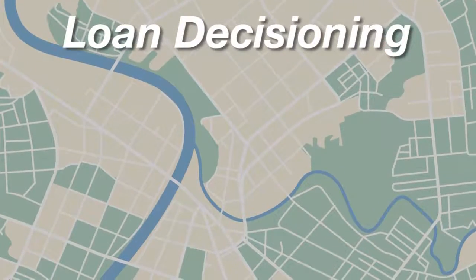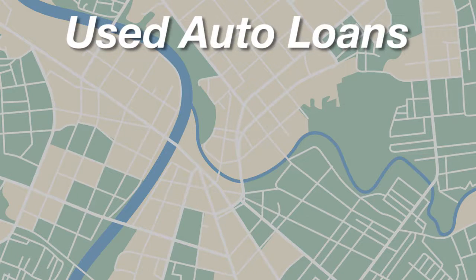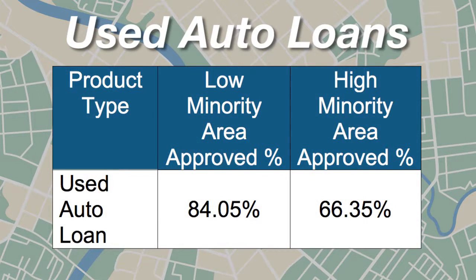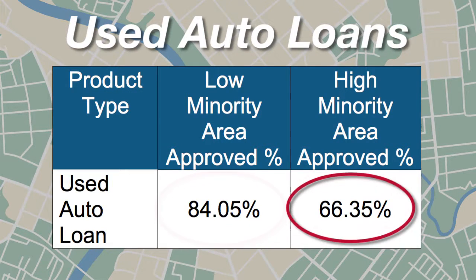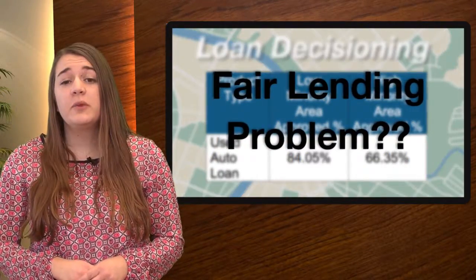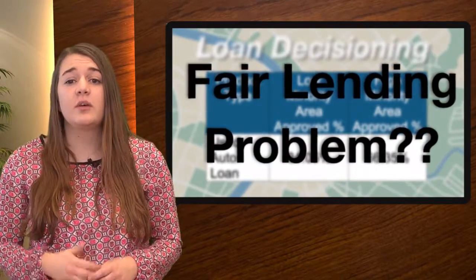For example, say you took a look at your loan decisioning data for a given product, such as used auto loans, in two areas of your community with differing minority concentrations. Here we see an 84% approval rate in a low minority area compared to a 66% approval rate in a high minority area. Someone might look at this and think your institution has a big fair lending problem. This is where a regression analysis could come in handy.